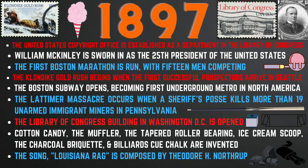Now we will look at the history of the year 1897. In 1897, the United States Copyright Office is established as a department in the Library of Congress. William McKinley is sworn in as the 25th President of the United States. The first Boston Marathon is run with 15 men competing. The Klondike Gold Rush begins when the first successful prospectors arrive in Seattle. The Boston subway opens, becoming the first underground metro in North America. The Lattimer Massacre occurs when a sheriff's posse kills more than 19 unarmed immigrant miners in Pennsylvania. The Library of Congress building in Washington, D.C. is opened. Cotton candy, the muffler, the tapered roller bearing, the ice cream scoop, the charcoal briquette, and billiard cue chalk are invented. The song 'Louisiana Rag' is composed by Theodore E.H. Northrup.